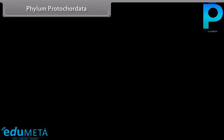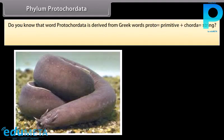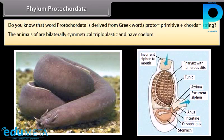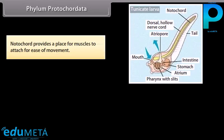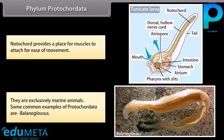Phylum Protochordata: the word is derived from Greek words proto, meaning primitive, plus chorda, meaning string. The animals are bilaterally symmetrical, triploblastic, and have a coelom. They have a notochord, which is a long rod-like support structure that runs along the back of the animal, separating the nervous tissue from the gut. This notochord is not present at all stages of life. The notochord provides a place for muscles to attach for ease of movement. They are exclusively marine. A common example is Balanoglossus.